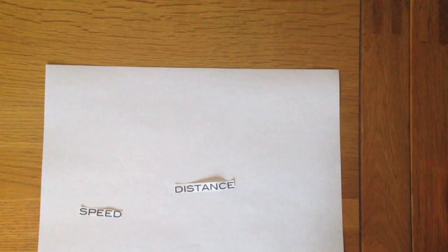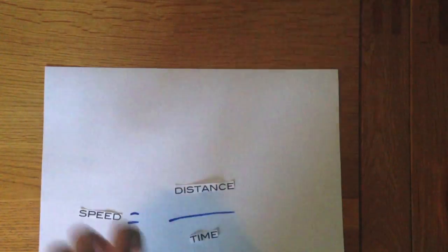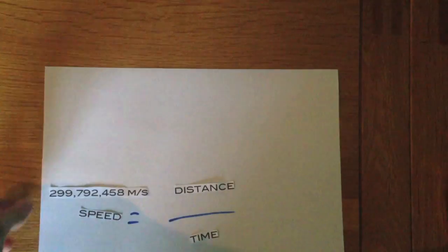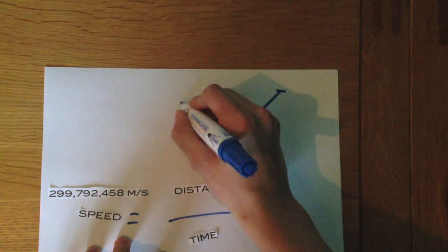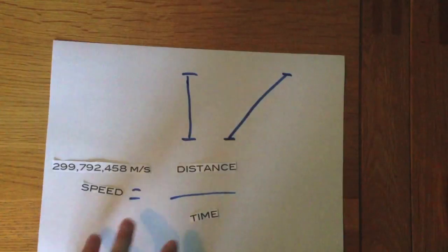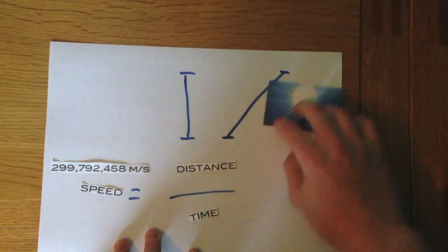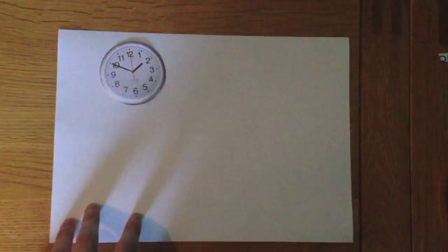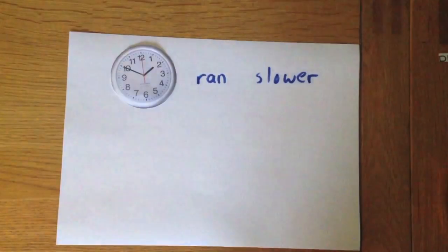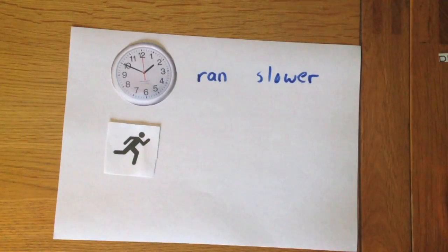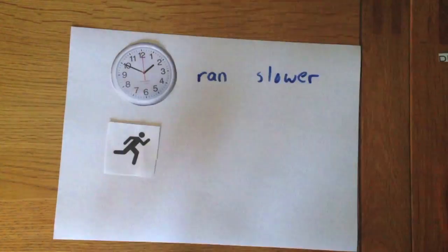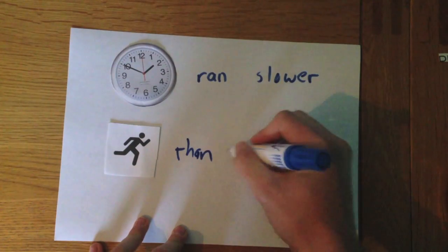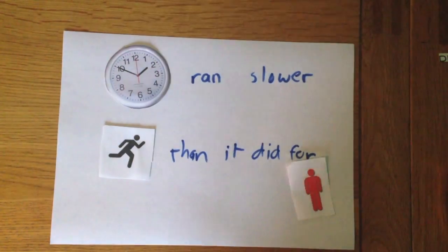We can take that speed is equal to distance divided by time, and that the speed of light cannot change. We have two distances then. The light will take longer to travel the longer distance than it will the shorter one. We can say from this that time ran slower for those who were moving and saw the light travel up and down than it did for those who were standing still and saw the light travel in a zigzag pattern.